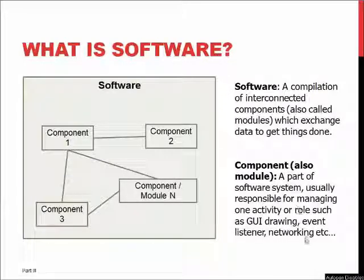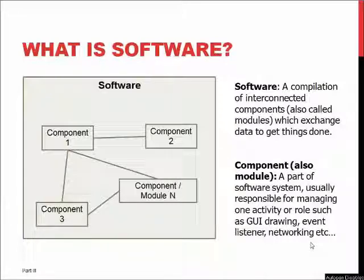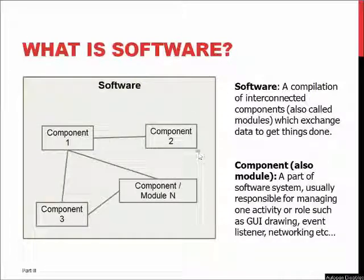are parts of software made with source code and they include one coherent functionality or one activity. They are usually something like an event listener for keyboard or touch screen, a user interface drawing component, one component managing networking, or data communications between the software and the client. They all exist in one software system — the larger box — and they are interconnected to each other.